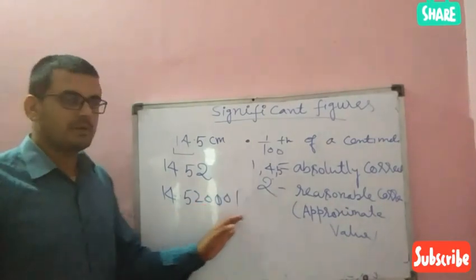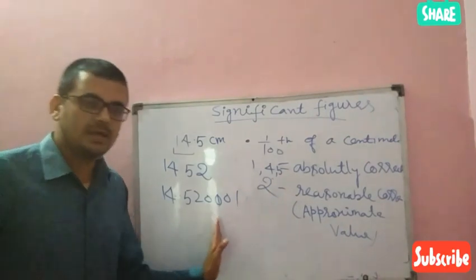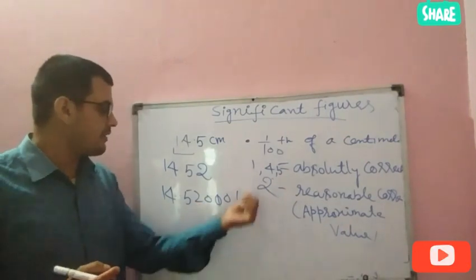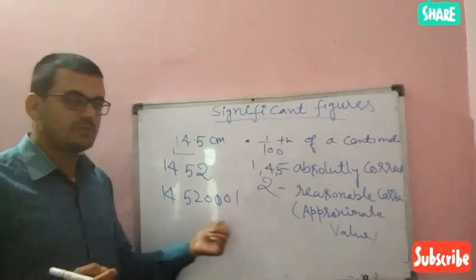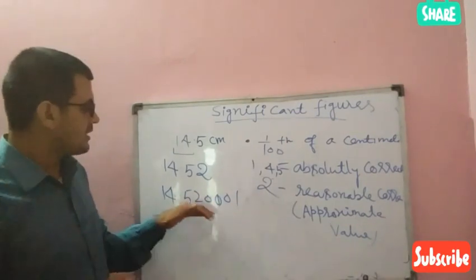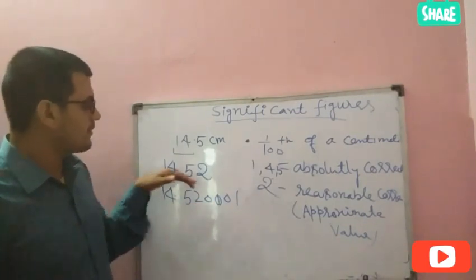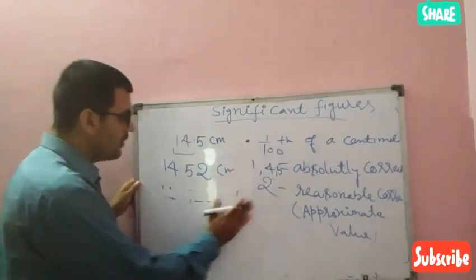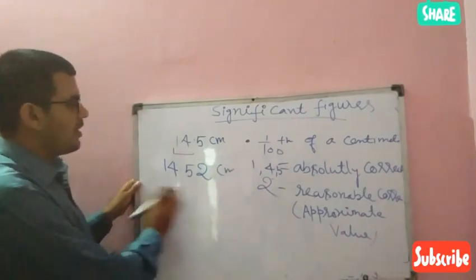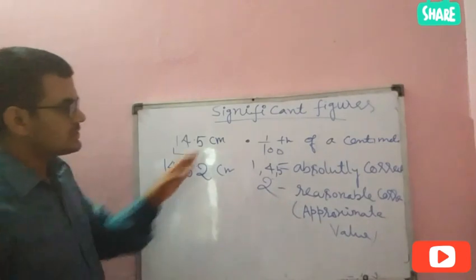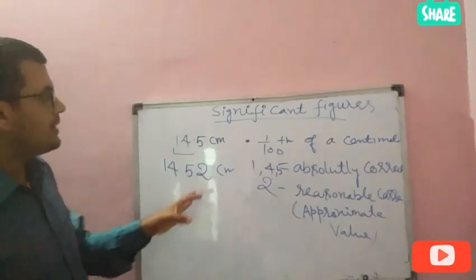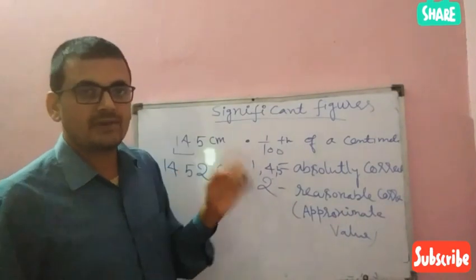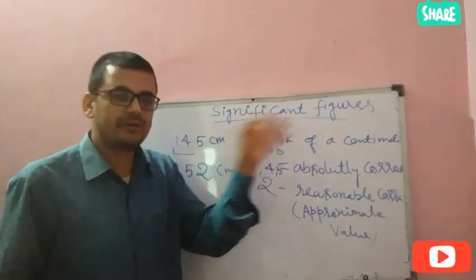Generally, what we do is leave those uncertain numbers because there will be no effect when we leave them. So we generally write 14.52 centimeter. Now, on the basis of these two examples, we will state the definition of significant figures.